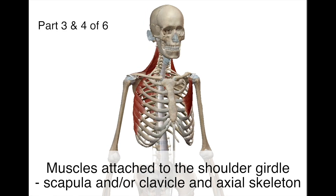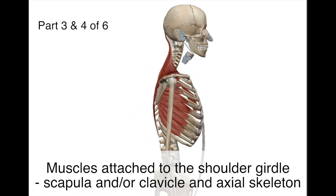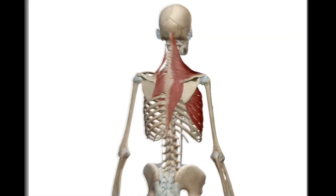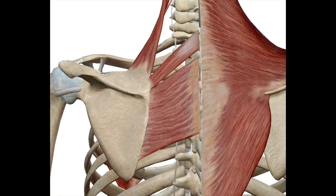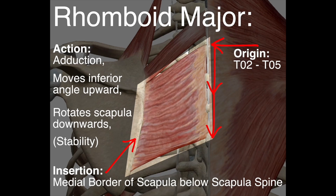Hey guys, so today we're going to be looking at the rhomboids. We're going to start with the rhomboid major. It originates from T2 down to T5 of the spinous processes and inserts into the medial border of the scapula below the scapula spine.